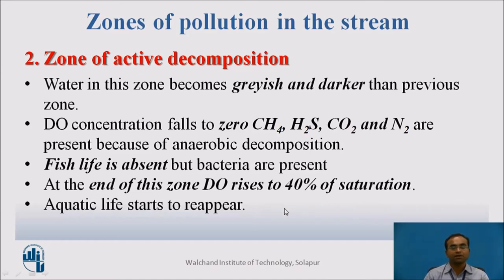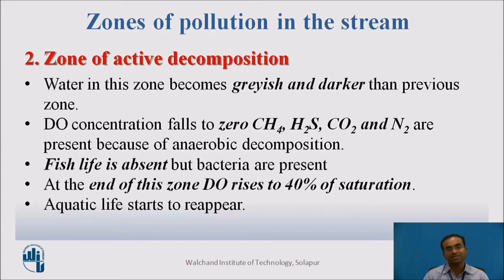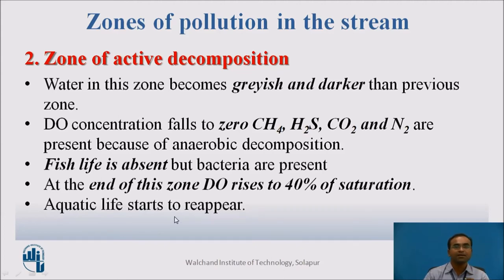A peak point arrives where, since food (wastewater) has been continuously decomposed from the first zone, the food eventually reaches zero. With no food available, microorganisms start consuming themselves and their population decreases. As microbial activity drops, oxygen demand decreases and DO in the stream increases. The zone of active decomposition ends when DO reaches 40% of saturation, and at this point aquatic life starts to reappear.